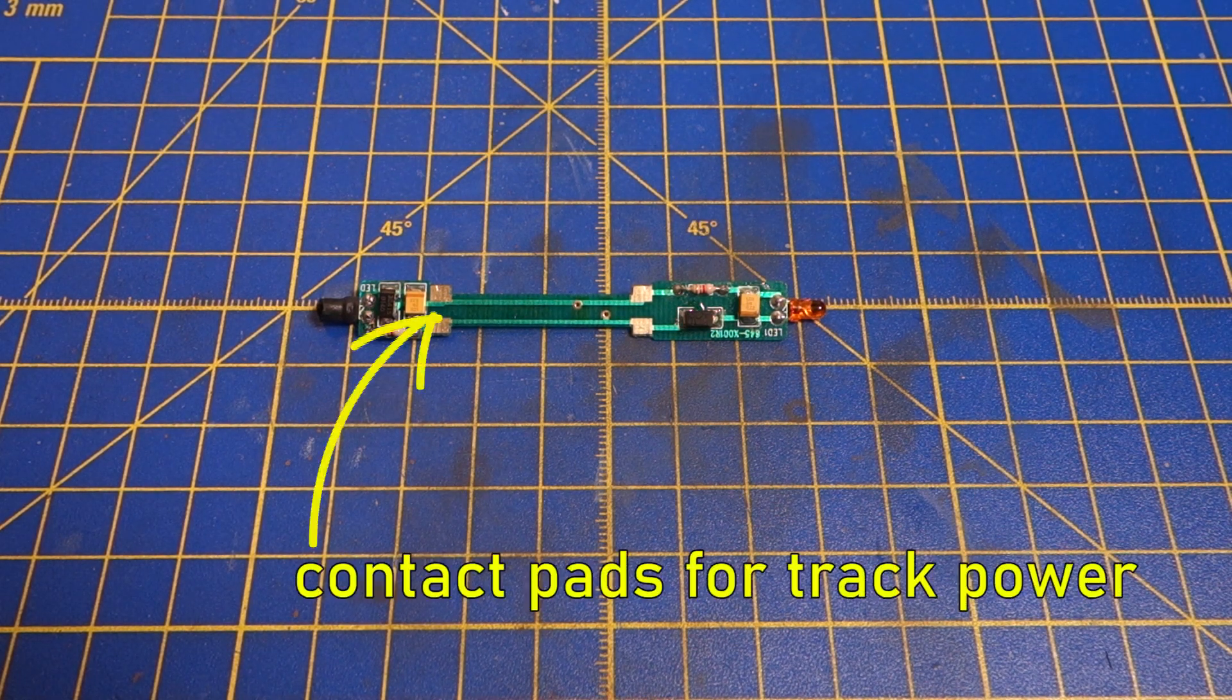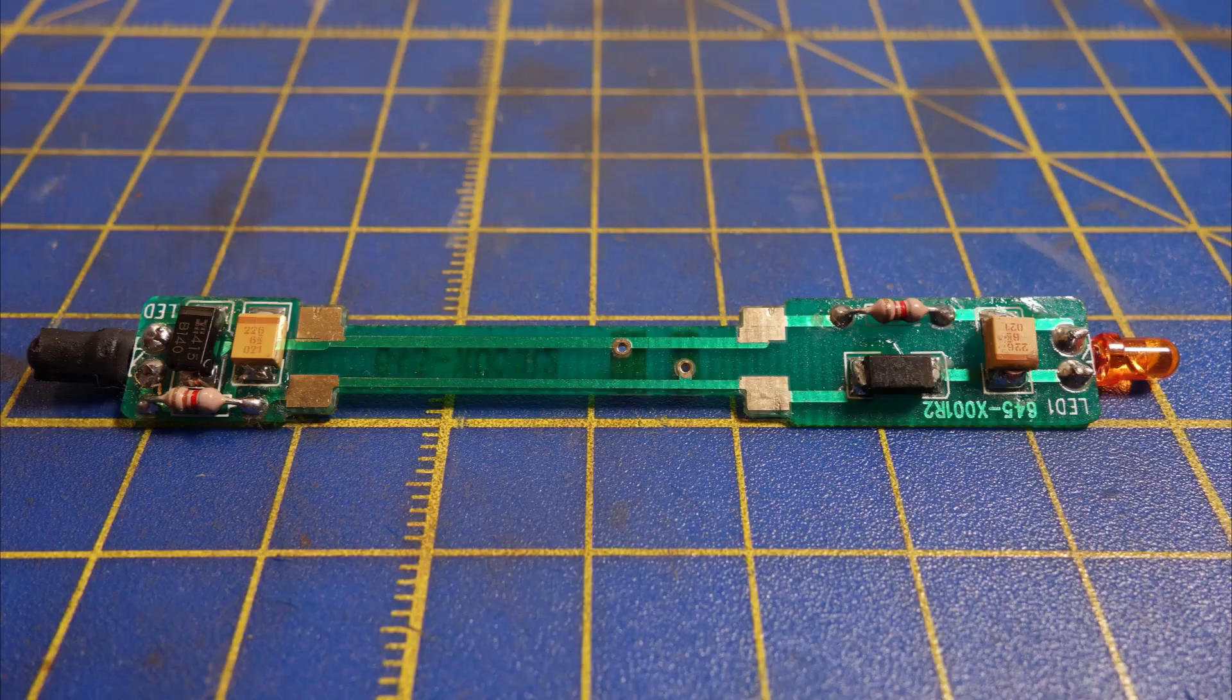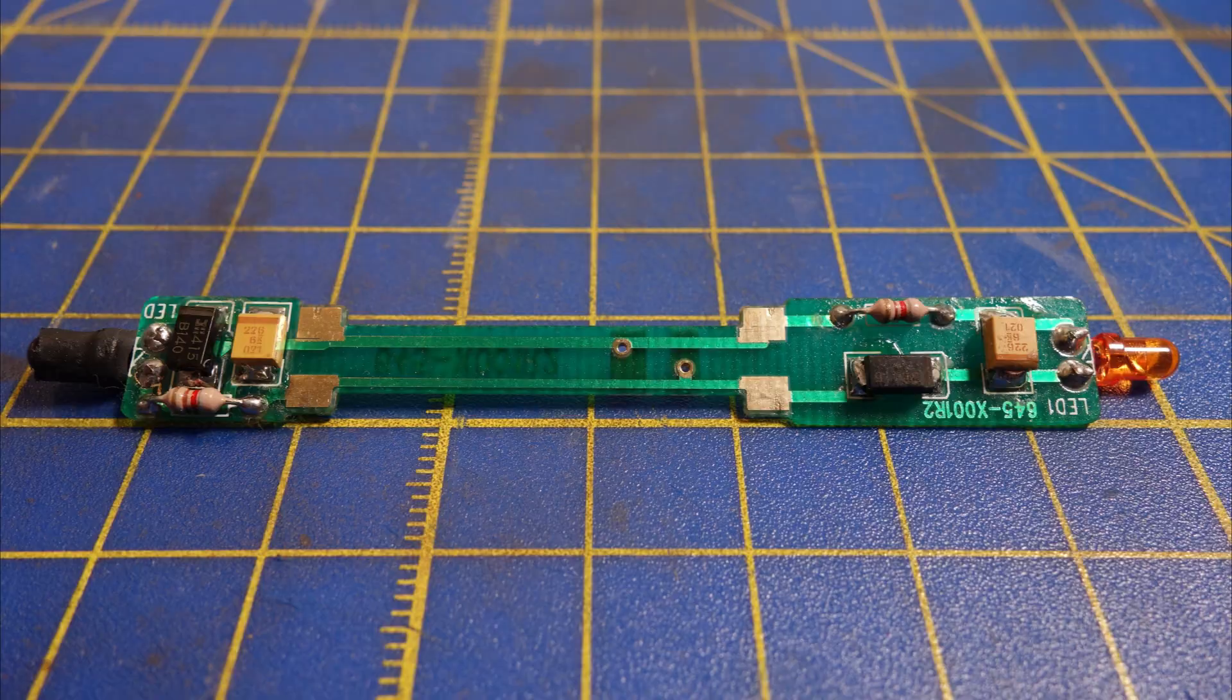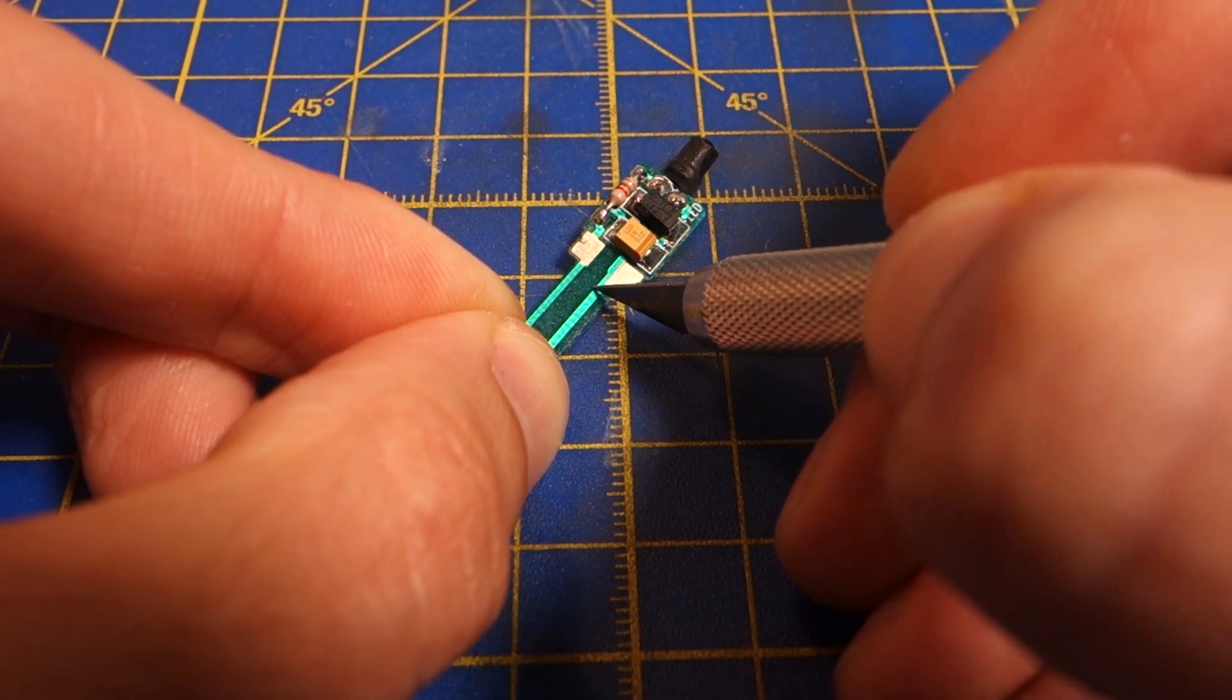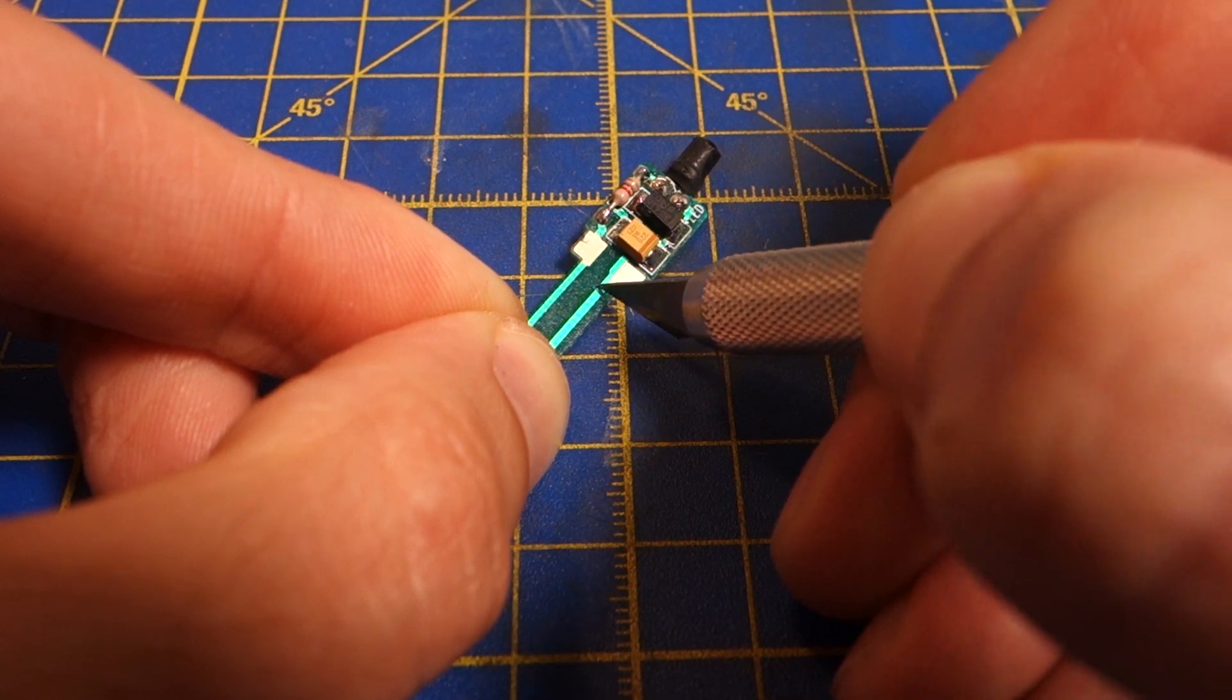After the conversion to DCC, all the connections run through the decoder, so I have to cut a couple of the traces on the board to make that happen. On DC, the motor contacts connect directly to the power pickups from the track. To isolate the motor, I make four cuts on the lightboard with a hobby knife. I also widen the cuts a bit to make sure that there is none of the copper trace remaining in the board.